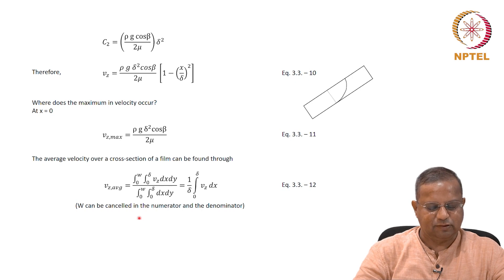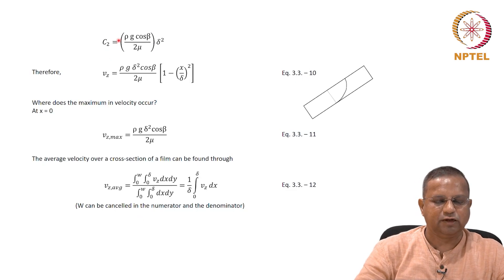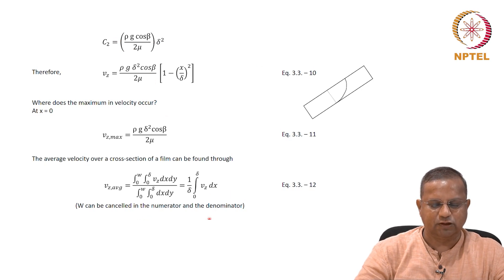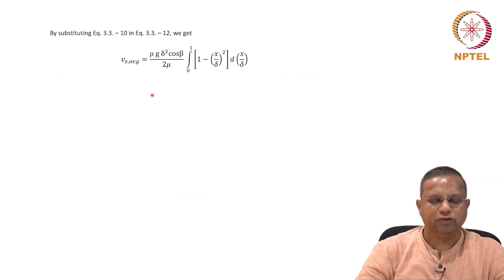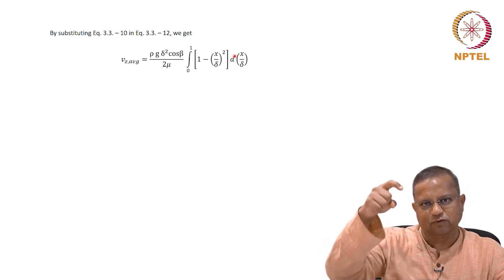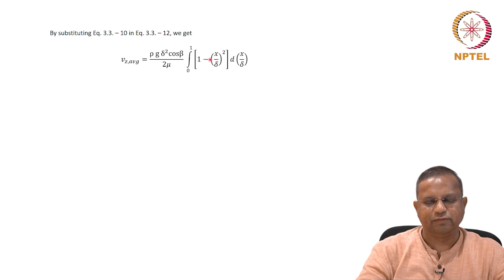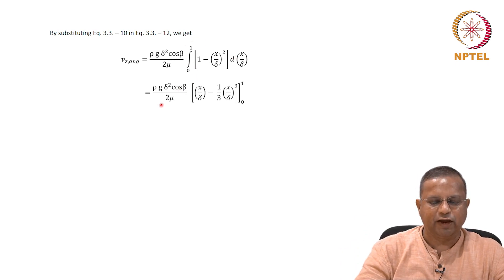If you evaluate this, if you substitute equation 3.3-10 into vz, we integrate from 0 to delta divided by delta. You will get vz average equals rho g delta square cos beta by 2 mu integral of 0 to 1, 1 minus x by delta square dx by delta. Because the thickness of the layer is delta, x by delta goes from 0 to 1. You get rho g delta square cos beta by 2 mu, x by delta minus 1 third x by delta cube going from 0 to 1, this is the integrated value. That will turn out to be rho g delta square cos beta by 3 mu. Just work it out yourself and convince yourself, this is the average velocity. We are usually interested in the average velocity.